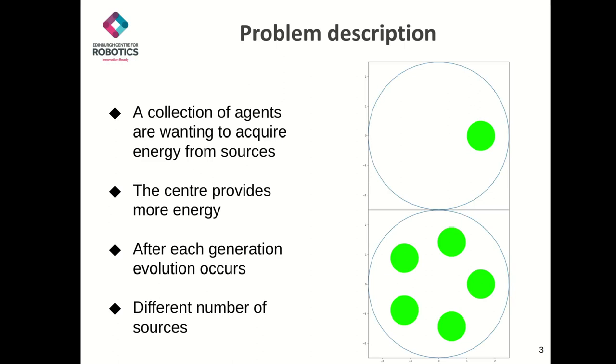We explore this idea using an evolutionary swarm operating in a 2D circular environment. Each agent of the swarm is aiming to maximize its energy, which it can acquire from sources, represented in the figures here as green disks. If the agent is inside a green disk, it receives energy with the source's centers providing the most.